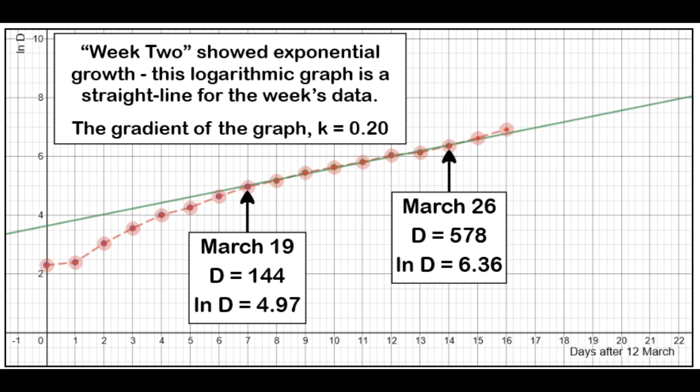The other important thing that can be drawn from the data for week two is it does indicate that the total deaths are rising exponentially. When you plot the data according to its natural logarithms, as shown in this graph and explained in the earlier section in Further Maths, then the graph appears to be pretty clearly a straight line. This is what you would expect for exponential growth.